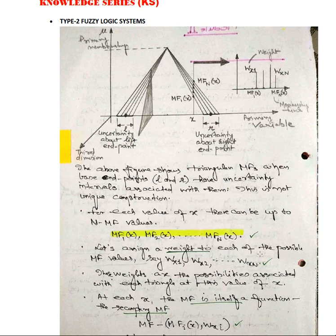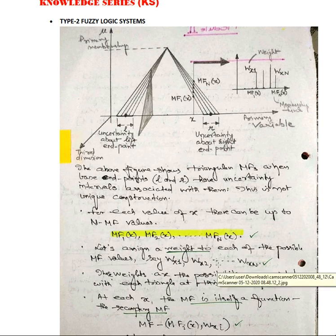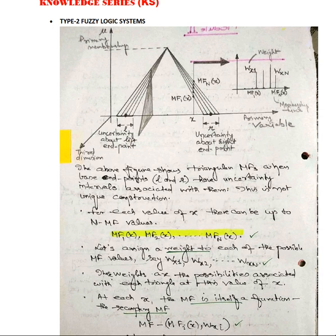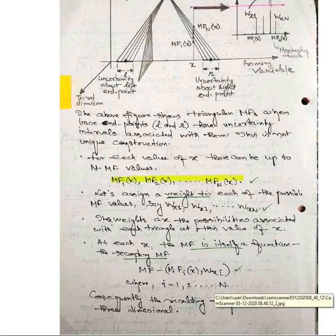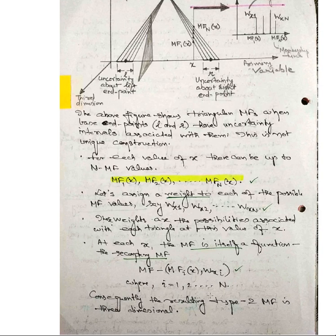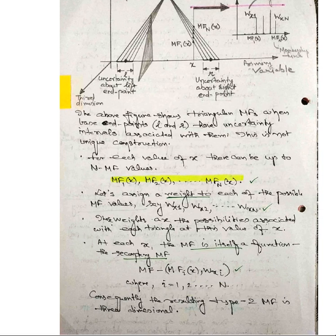Here, let us assign the weight for each possible value of MF1. Every value of membership will have a weight WX. These weights are the possibility associated with the triangle for each value of X. That is how you can get the integral value: 1/1, 2/2, 3/3. For each value of X, these membership functions are the secondary membership functions, defined as MFI(X, WX_I). This MFI is nothing but the membership function related to the secondary Type 2 membership function.